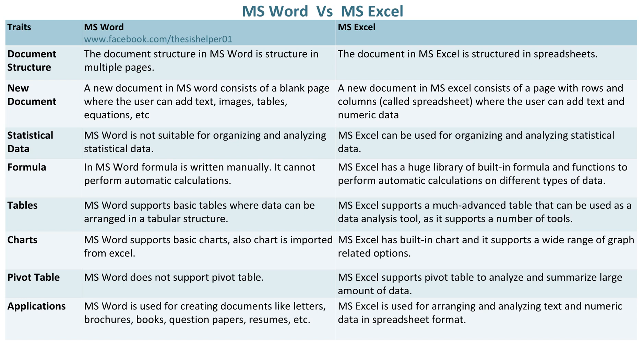MS Word supports basic charts, and charts can also be imported from Excel. Whereas, MS Excel has built-in charts and supports a wide range of graph-related options. MS Word does not support pivot tables. Whereas, MS Excel supports pivot tables to analyze and summarize large amounts of data.